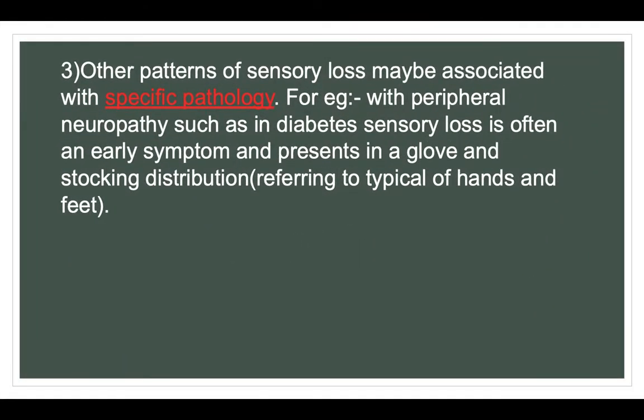Other patterns of sensory loss may be associated with a specific pathology. For example, with peripheral neuropathy such as in diabetes, sensory loss is often an early symptom and presents in a glove and stocking distribution, referring to the typical pattern of the hands and feet.